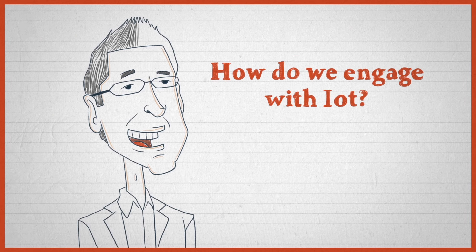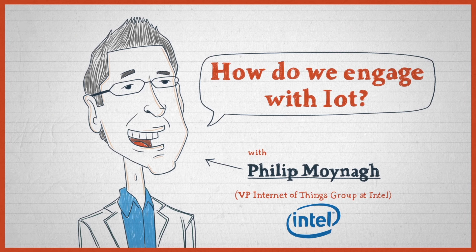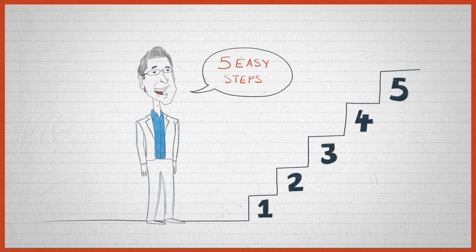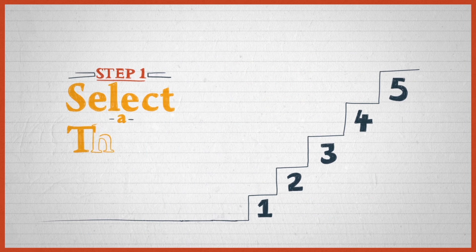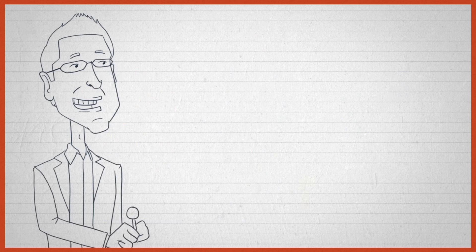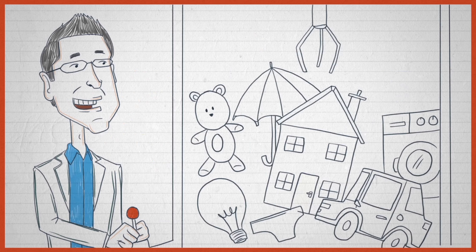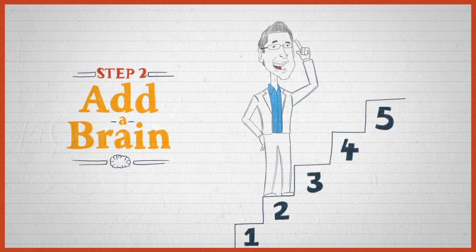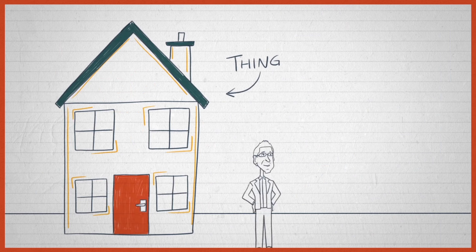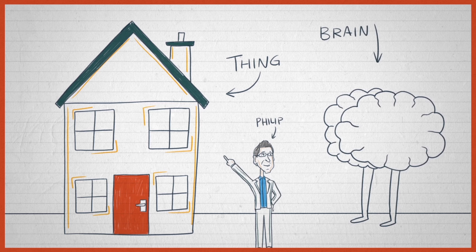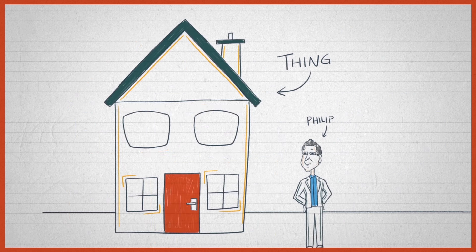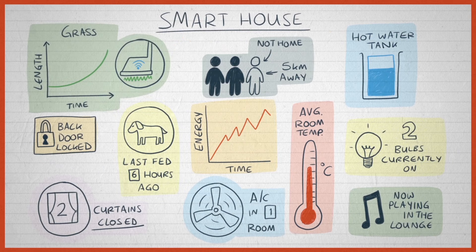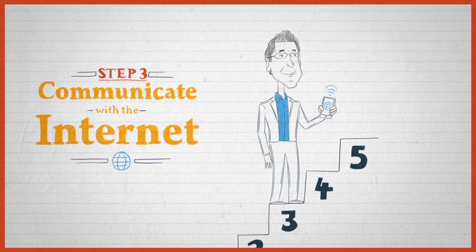So how do I engage in the revolution that is the Internet of Things? Well, it's five easy steps. The first and most obvious thing is select a thing — a light bulb, a washing machine, a car, a lawn, a building. Just select a thing that matters to you. Step two: you now need to add a brain to that thing, because we're going to ask that thing to be self-aware, to be smart. So we need to add a brain — a microprocessor or a computer that allows that thing to think for itself.